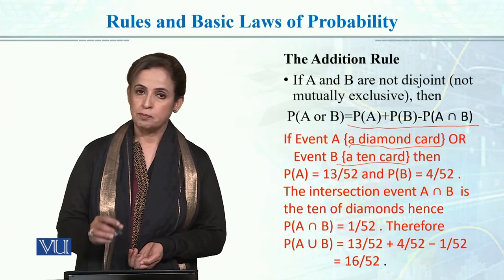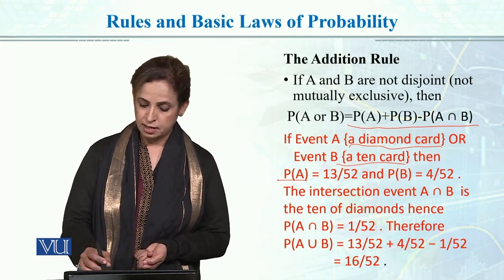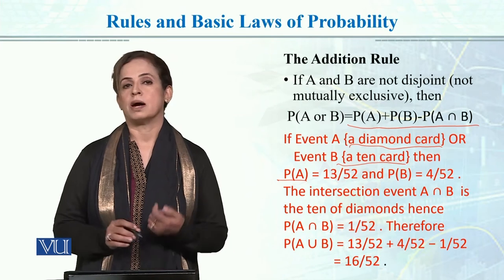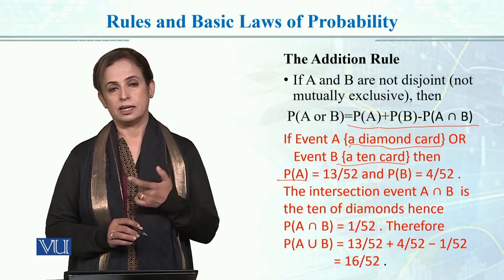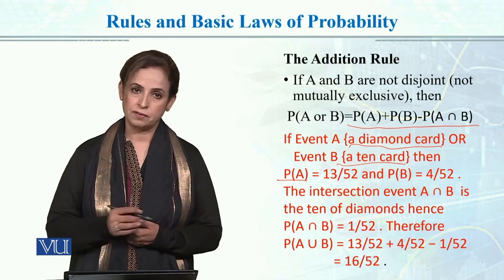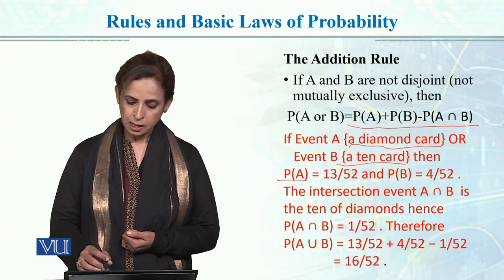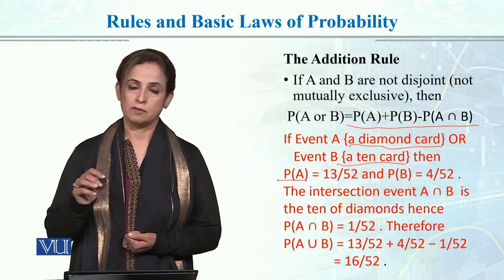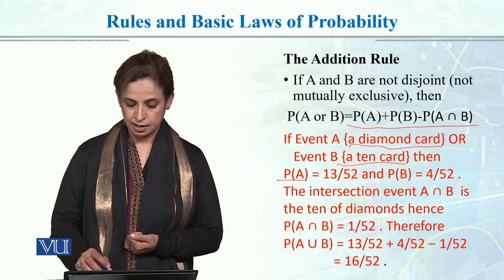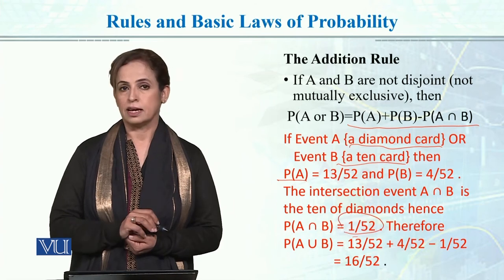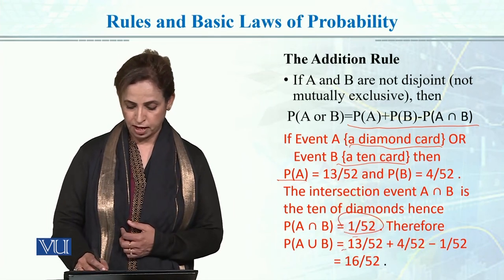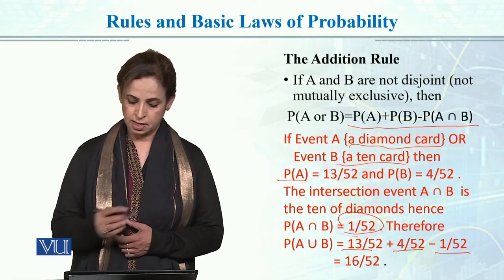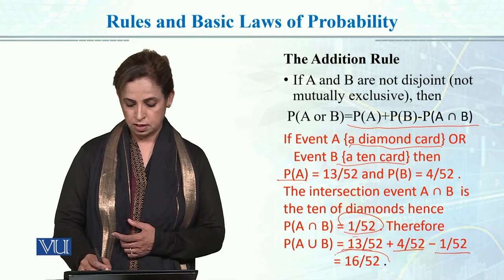To calculate this probability, we find the separate probabilities first. The probability of event A — drawing a diamond — is 13/52, since there are 13 diamond cards. The probability of event B — drawing a 10 — is 4/52, since there is one 10 in each of the four suits. The intersection — the card that satisfies both — is the 10 of diamonds, which is just 1 card, so 1/52. Applying the addition rule: P(A or B) = 13/52 + 4/52 − 1/52 = 16/52.